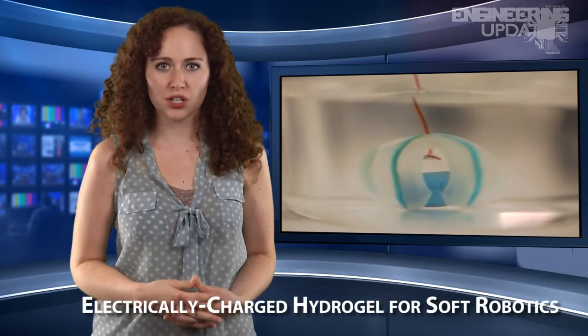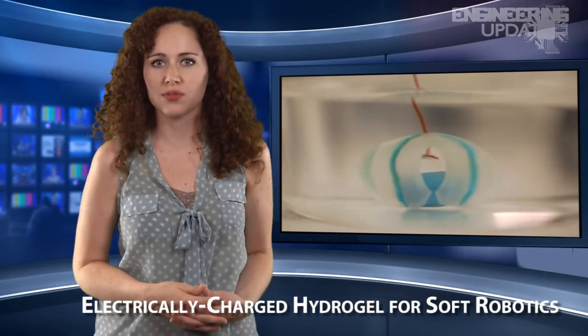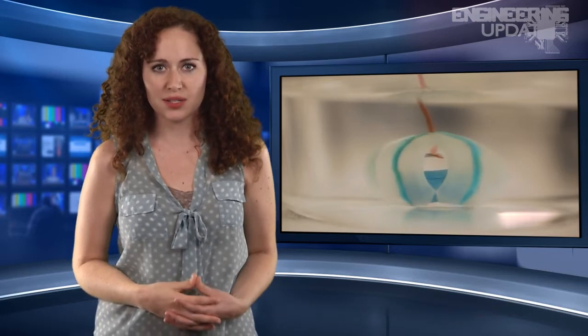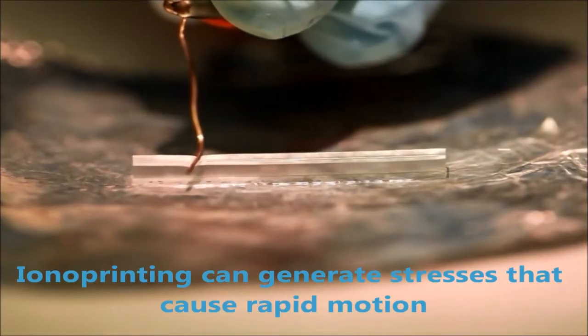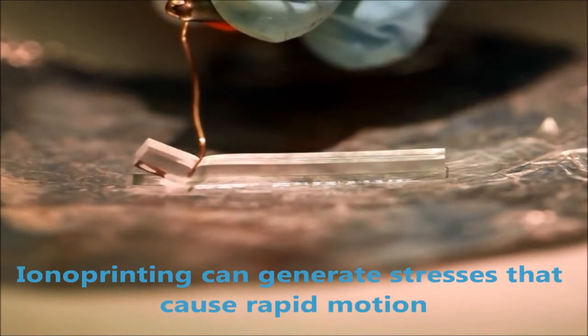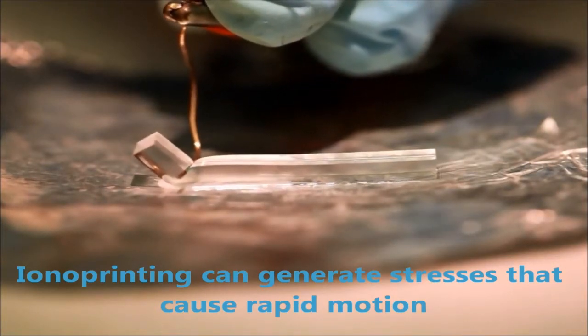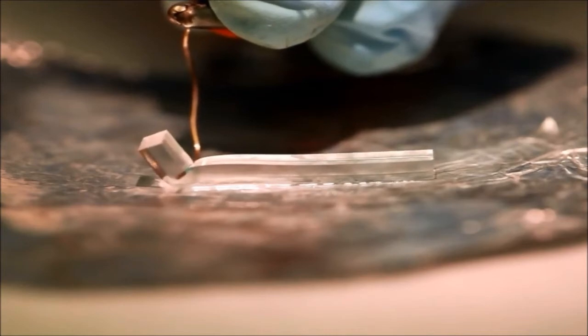Researchers at North Carolina State University have developed electrically charged hydrogels for use in the growing field of soft robotics, which finds its inspiration from squid and starfish. The ionoprinting technique uses a copper electrode to inject positively charged copper ions into a hydrogel material consisting of copper and polymer.